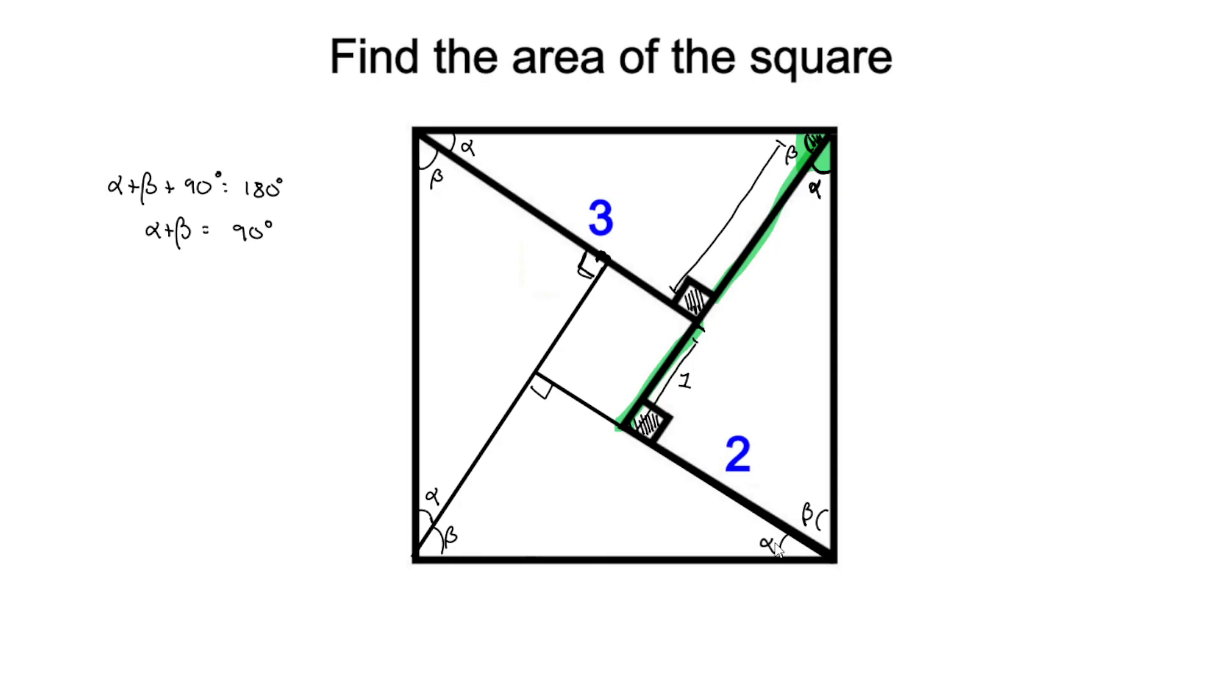So now we have four triangles, four identical triangles, plus this square right here. And all of that will form the area of our large square. So we have our four triangles plus our small square.